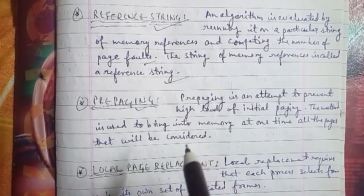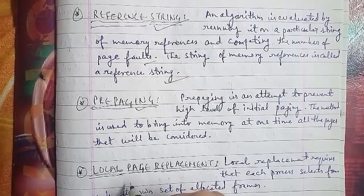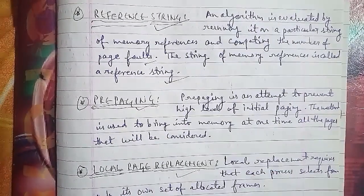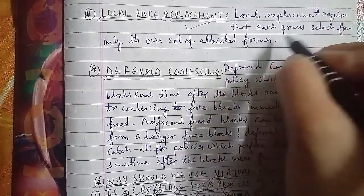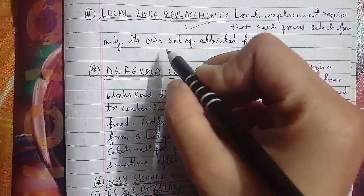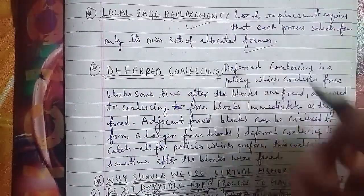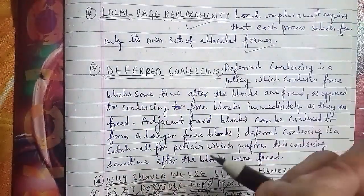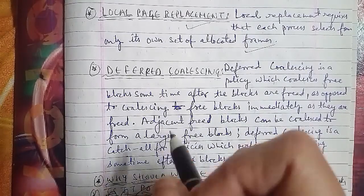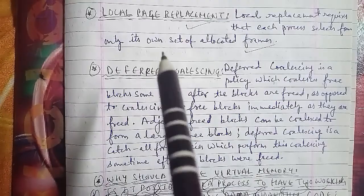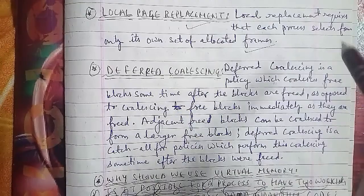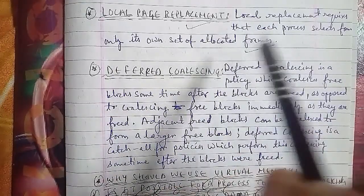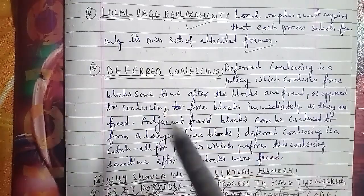Deferred coalescing: deferred coalescing is a policy which coalesces free blocks sometimes after the blocks are freed, as opposed to coalescing free blocks immediately as they are freed. Adjacent freed blocks can be coalesced to form a larger freed block.